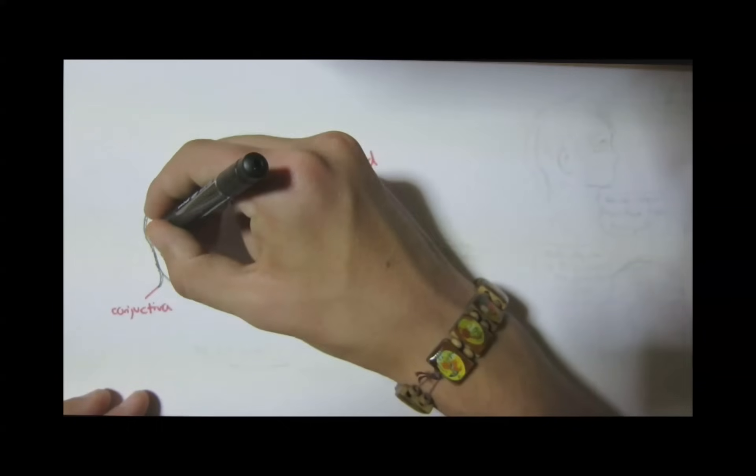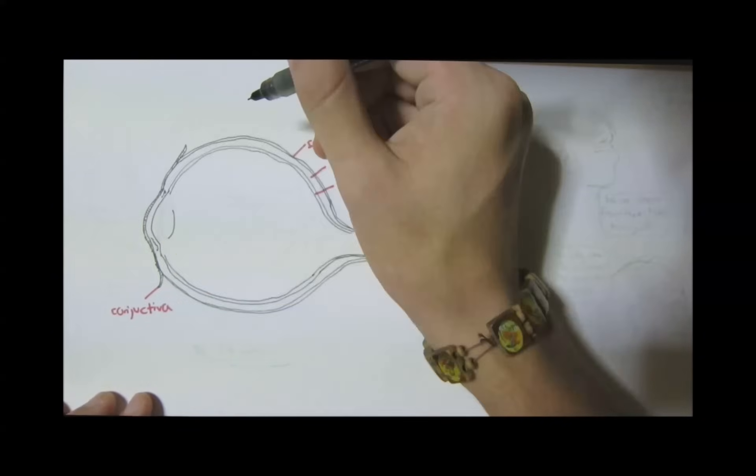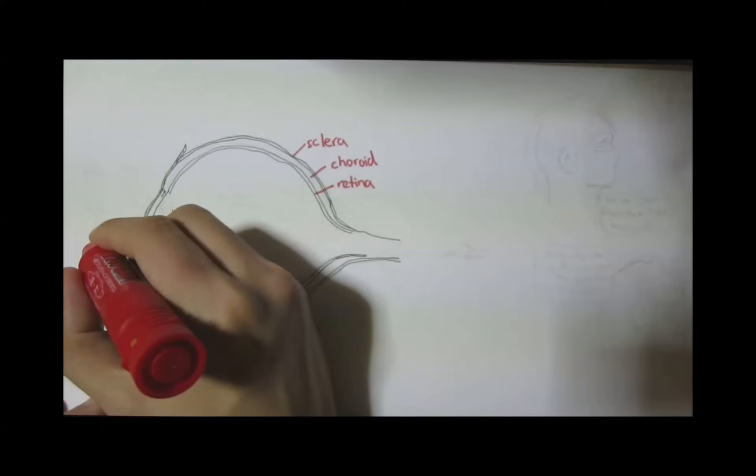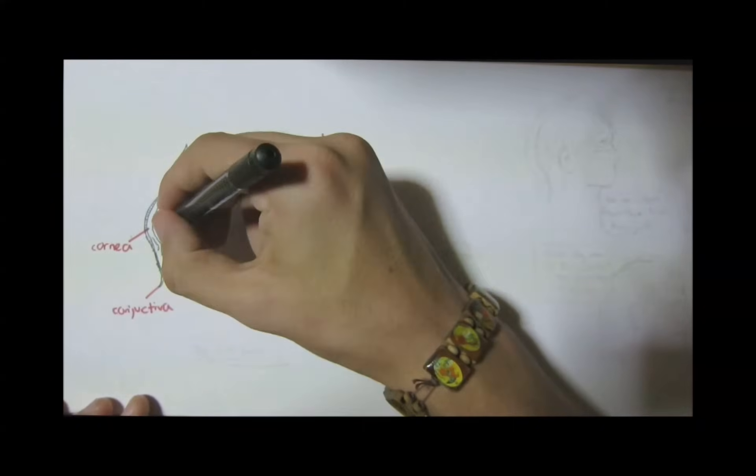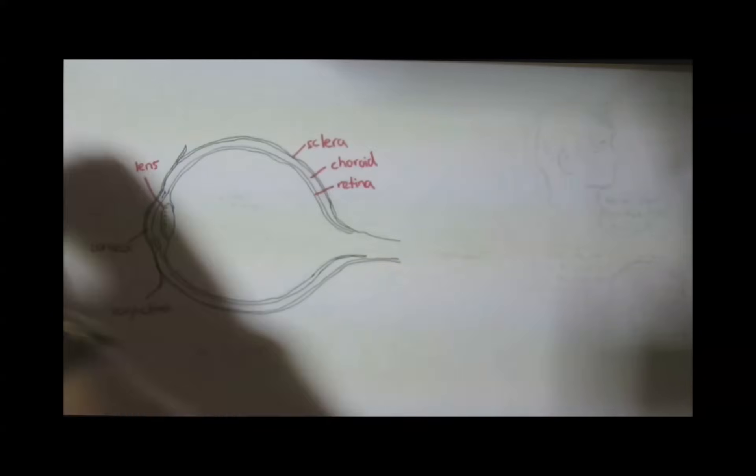And here is the cornea, which forms a window letting light into the eye. It, together with the lens, is the major part of light refraction, bending the light as it goes inside the eye.